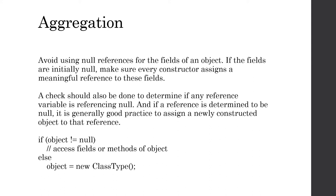One more thing to consider: be careful about null references for object fields. If fields are initially null, every constructor should assign a meaningful reference. A check should also be done to determine if any reference variable is null — if it is, it's generally good practice to assign a newly constructed object to that reference. The general pattern: if the object does not equal null, access its fields or methods; otherwise, construct a new object and assign it to that reference variable.